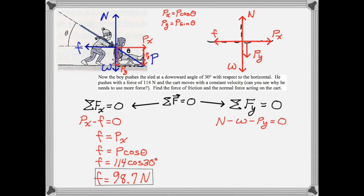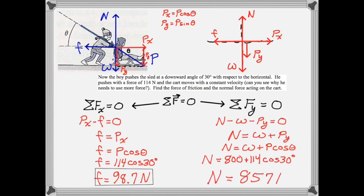A lot more friction than before, because now, since there's a part of the push that's downward, the normal force is increased and therefore friction is increased. The vertical force equation shows that the normal force is positive, but the weight and the vertical component of push are negative. Solving for n, making the trig substitution, and plugging in the numbers, we find that the normal force is 857 newtons. The 114 newtons push force was not selected randomly — given the numbers in the previous problem, I was able to calculate the effect of the surfaces upon the friction. Keeping that constant, the boy had to push with a larger force, because as he pushes down the normal force is increased and therefore friction is increased. 114 newtons was the only force that he could use to keep the sled in constant motion.